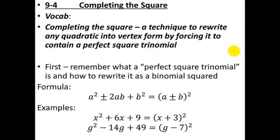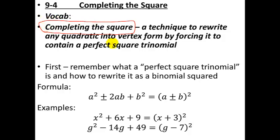Here we're continuing on with Section 4 of Chapter 9: Completing the Square. This is a technique that you can use to convert any quadratic into a perfect square trinomial. It's going to be useful because when you convert a quadratic function into a perfect square trinomial, then you can easily put it into vertex form.